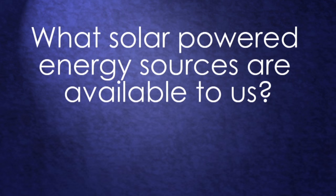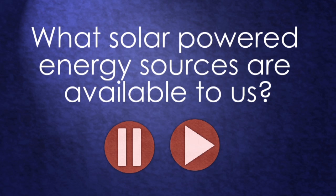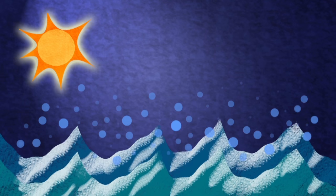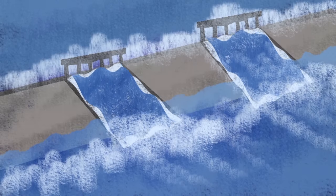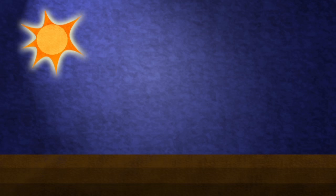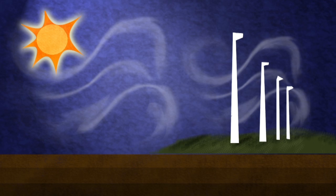Can you think of what solar-powered energy sources are available to us? Pause and think. The sun lifts water from the ocean, so hydropower is solar power. The sun heats the earth unevenly causing winds to blow, giving us wind turbines and wave power.